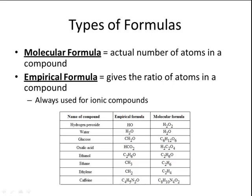There are two basic types of chemical formulas: molecular formulas and empirical formulas. In a molecular formula, the actual number of atoms in the compound is shown directly in the chemical formula, whereas with an empirical formula, only the ratio of the atoms found in the compound are shown.